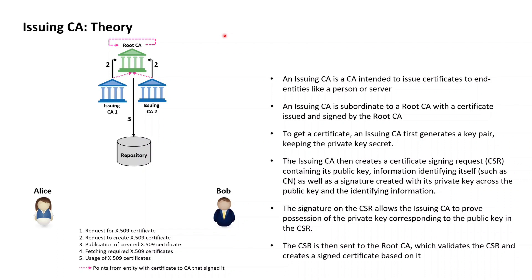Talking briefly about some of the theory around issuing CAs: an issuing CA is a CA intended to issue certificates to end entities like a person, server, or an IoT device. Issuing CAs are subordinate to root CAs, and as such an issuing CA has its public-private key pair certified by the root CA it is subordinate to.